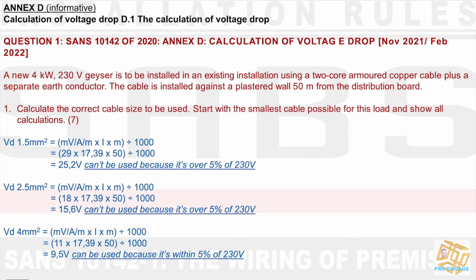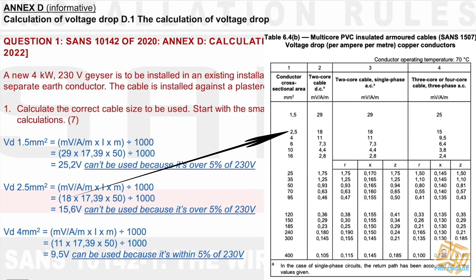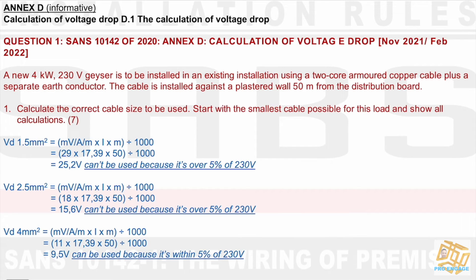Moving on to 2.5mm² cable. I go to the table for millivolt per amp per meter and find the value of 18 for 2.5mm². Using the same formula: 18 × 17.39 × 50 ÷ 1000 = 15.6 volts. This can't be used either because it's over 5% of 230 volts. So we understand how significant the 5% of 230V limit is — it tells us we cannot use this cable size.